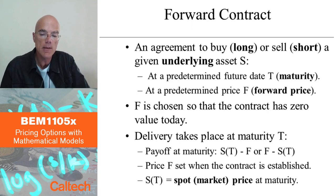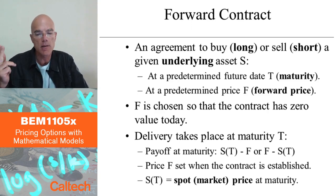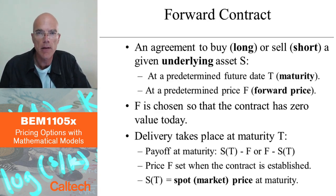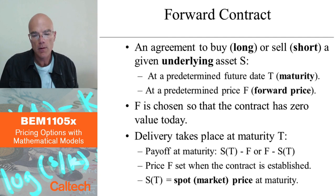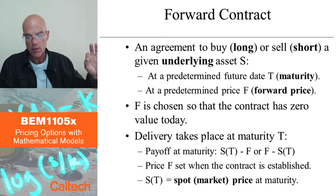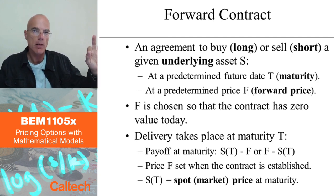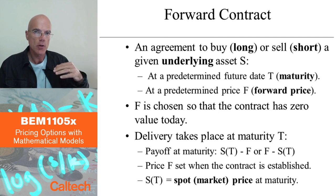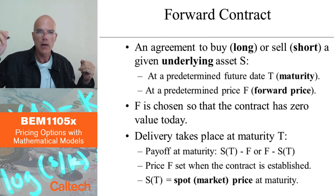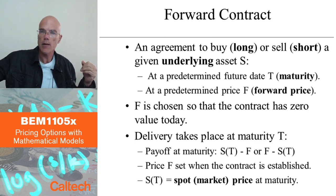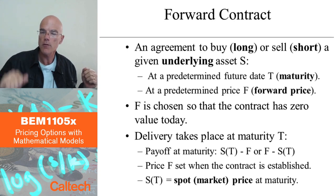Here is our first derivative contract, which has been in existence for really hundreds of years. It's called a forward contract. A forward contract is simply a contract in which two parties agree to exchange one thing for another in the future — typically cash for something else — at a pre-specified time in the future for a pre-specified amount of money.